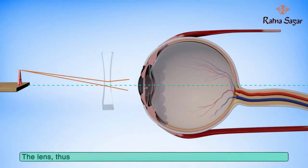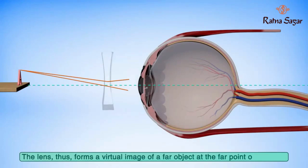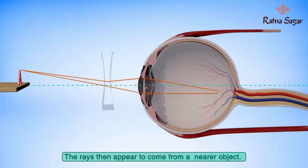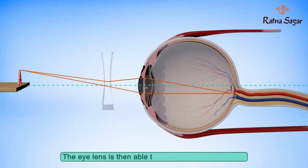The diverging lens forms a virtual image of a far object at the far point of the eye. The rays then appear to come from a nearer object, and the eye lens is then able to focus them on the retina.